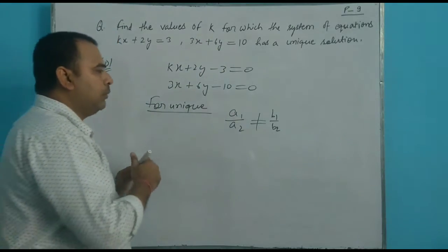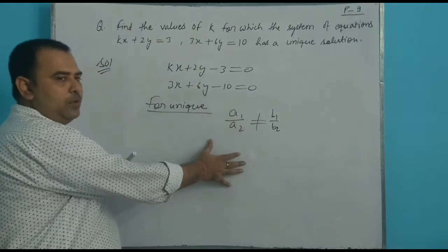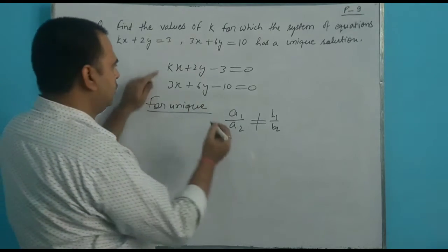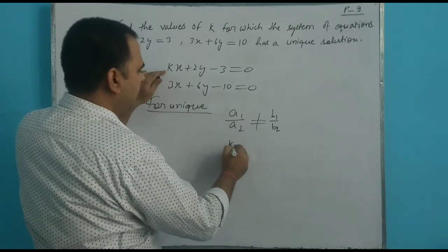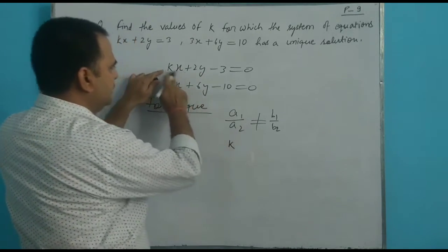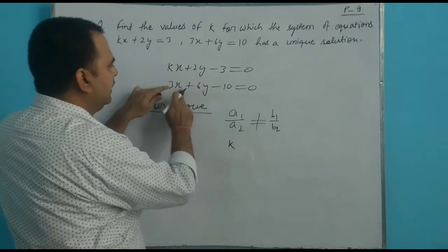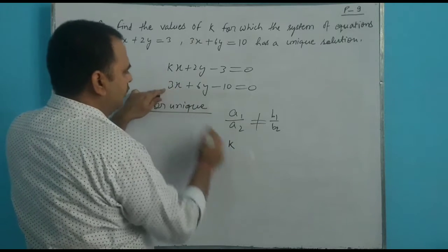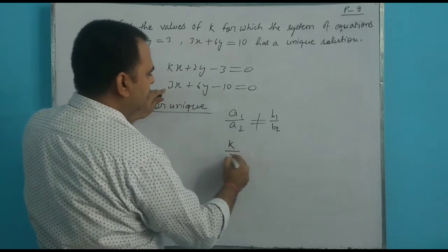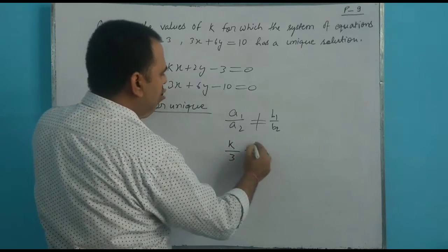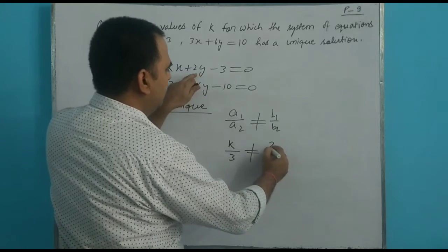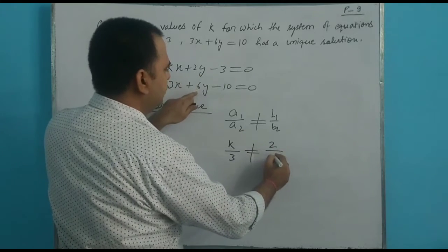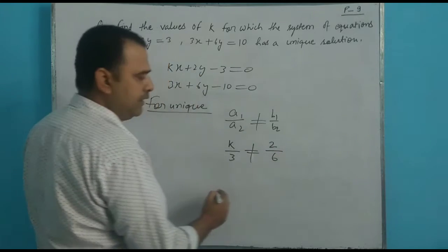Now identifying the coefficients: a1 is k, a2 is p — the x coefficients. And b1 is 2, b2 is 6 — the y coefficients. We apply the condition k upon p is not equal to 2 upon 6.